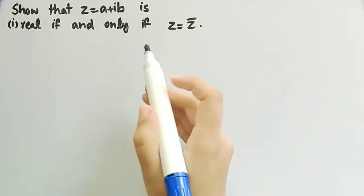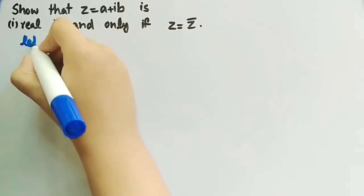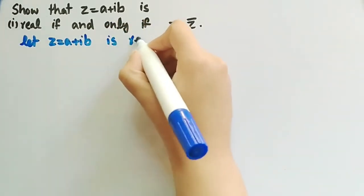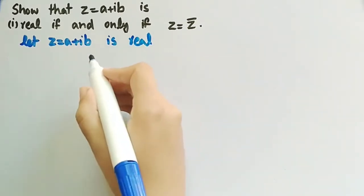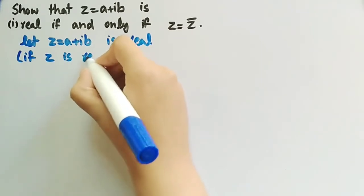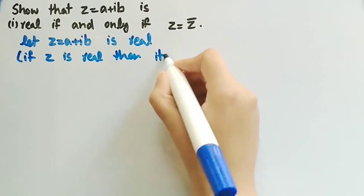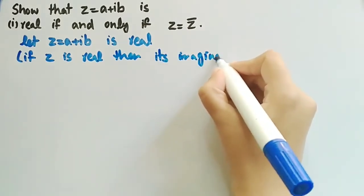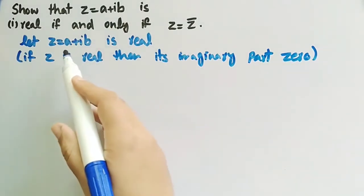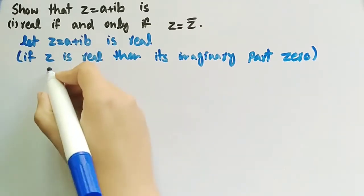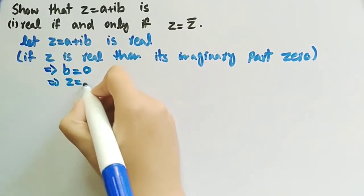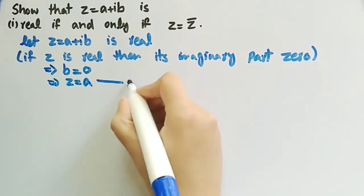Let's start the proof of the first part. We will consider that Z equal to A plus iB is real, and then we will prove that Z is equal to Z conjugate. Since Z is real, its imaginary part is 0. The imaginary part of Z is B, so B equals 0, which implies Z equals A. Let this be equation number 1.